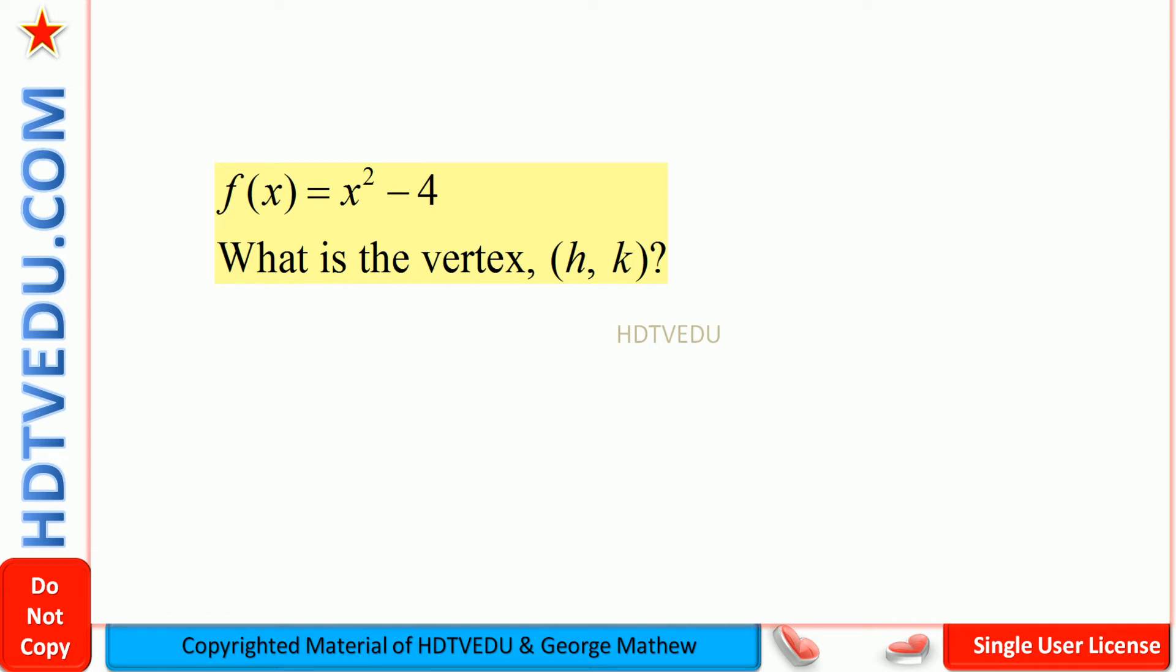We are given the function f(x) equals x to the power of 2 minus 4. What is the vertex? h, k.